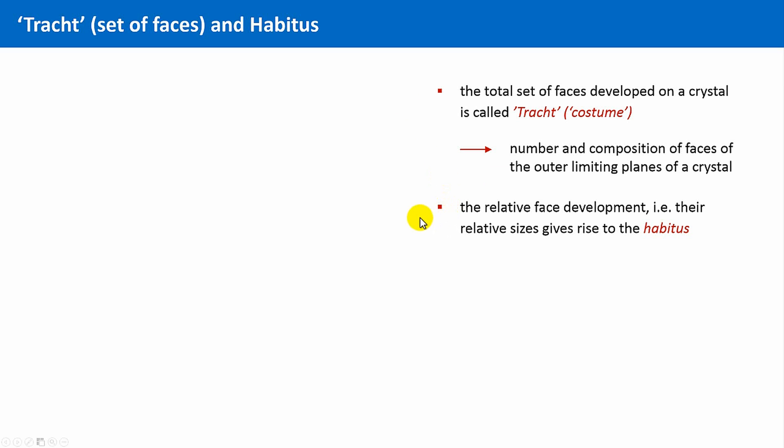The habitus on the other side is related to the relative size of the different faces the crystal is composed of. Two crystals can have the same costume, but a different habitus, and they can have the same habitus, but different costumes.